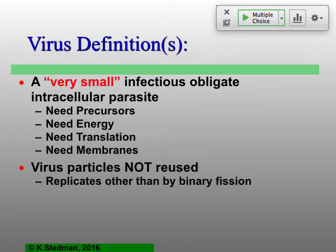The virion itself is never reused — very different from cellular replication, where you think about mother and daughter cells splitting off. Once a virion has been used and the genome has been released inside the infected cell, the virion is no longer used. What that means is that unlike cells which go from 1 to 2, 2 to 4, 4 to 8, they basically go from 1 to 0 to many — an extremely different process in terms of thinking about how all these things come together.